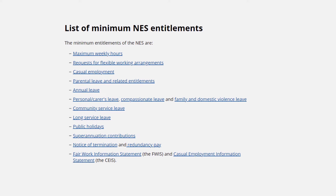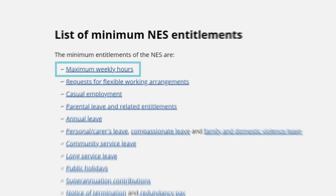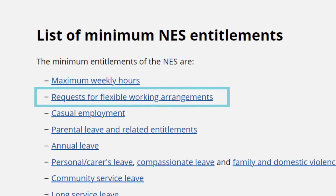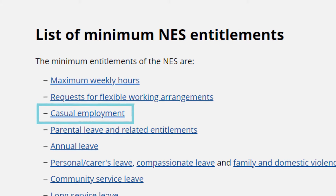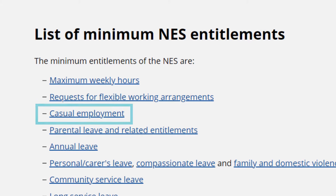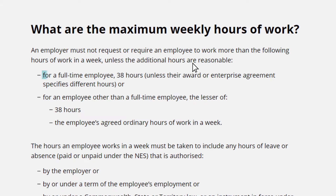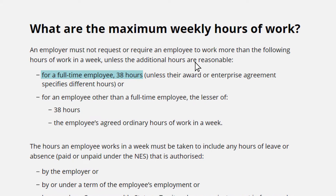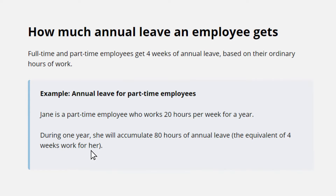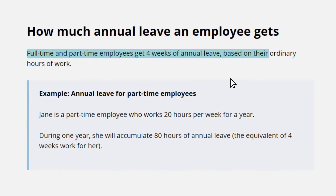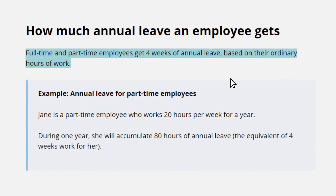There are 11 minimum standards, and these are them here. You'll see that quite a few of them cover leave entitlements, there are a few on working hours and arrangements, and then also how to handle converting casual staff to full or part-time employees. If we click into maximum weekly hours, you'll see that it's 38 for a full-time employee. And if we click on annual leave, you'll see that full-time and part-time employees get four weeks of annual leave based on their ordinary hours of work. We have actually made a video covering each of these 11 entitlements in detail, which you can check out here.